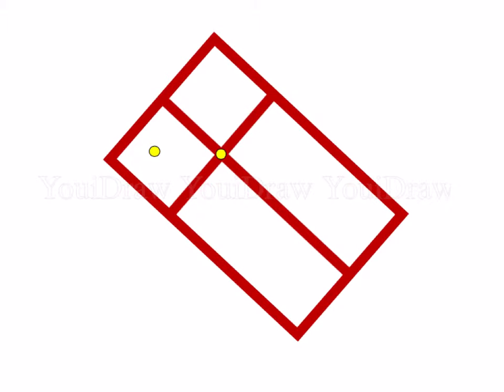So just to get started, we have our four basic chambers: our right atrium, left atrium, right ventricle, and left ventricle, as well as our intraventricular septum.